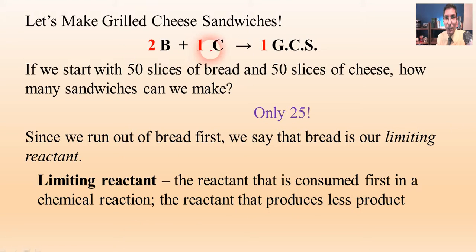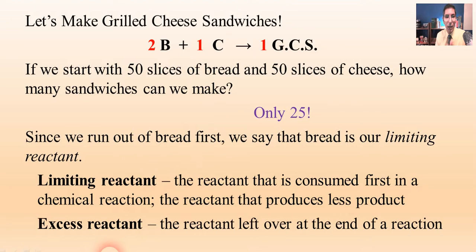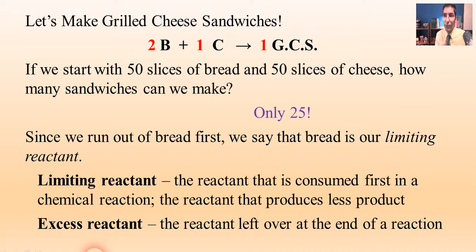We had enough cheese for 50 sandwiches, but we only had enough bread for 25. Now we have the limiting reactant, and then the others — or if you have more than two reactants, the others — would be called the excess reactant or excess reactants. That's what's left over. So after we make these 25 fabulous grilled cheese sandwiches, we're still going to have 25 slices of cheese left over. That would be the excess reactant — that's what's left over.